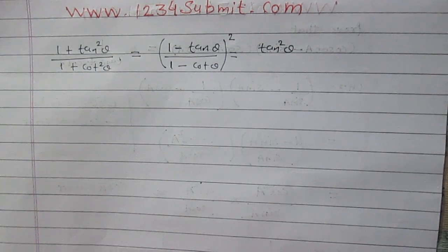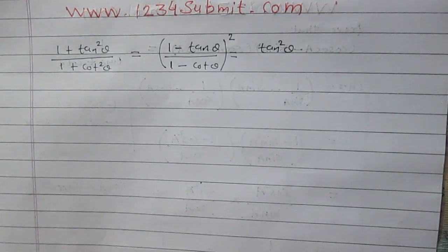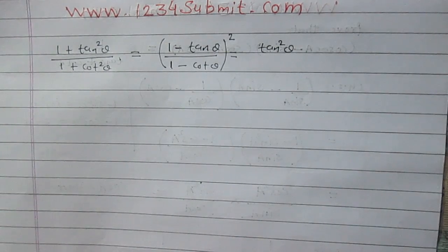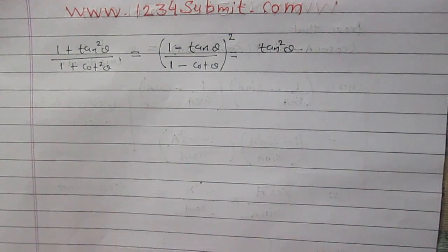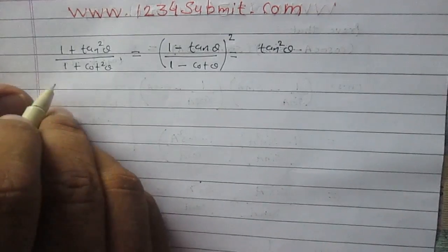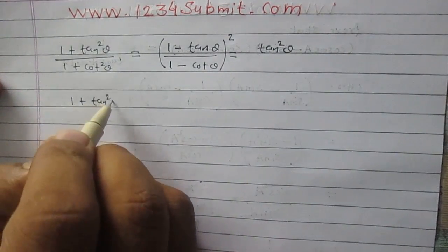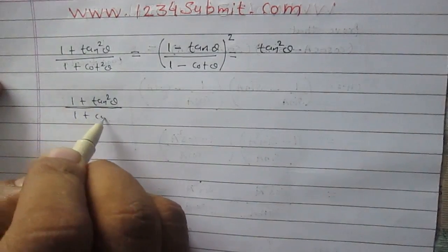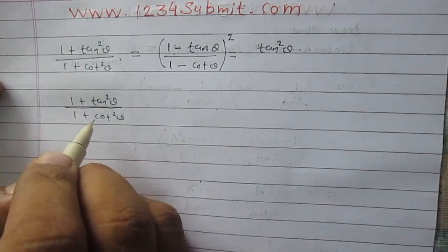In this question we are given three terms. The first term is (1 + tan²θ) / (1 + cot²θ). The second term is the whole square of the fraction (1 - tanθ) / (1 - cotθ). The third term is tan²θ. We are to prove that all these terms are equal. So let us consider (1 + tan²θ) / (1 + cot²θ).